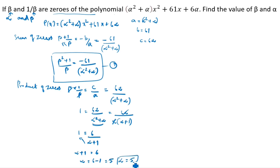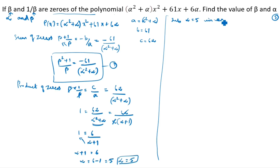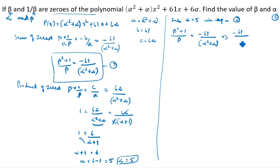So alpha is equal to 5. Now substitute alpha equals 5 into equation 1. Equation 1 is: beta plus 1 by beta equals minus 61 by (alpha squared plus alpha). With alpha equals 5: minus 61 divided by (25 plus 5), which gives beta plus 1 by beta equals minus 61 by 30.